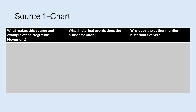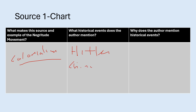We're finished with Source 1. For the chart: What makes this source an example of the Negritude movement? It's the reference to colonialism and the connections being made. What historical events? The author mentioned plenty — Hitler, China, and more. Why does the author mention historical events? Because he is trying to make connections between historic examples of colonialism, since this movement is about examining the role of colonialism and its psychological as well as physical impact on the society that is the victim of colonialism.